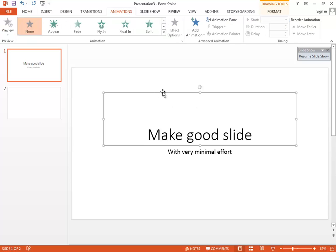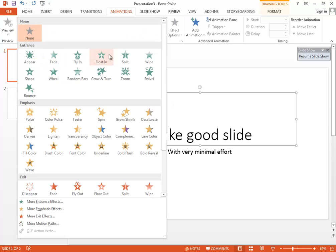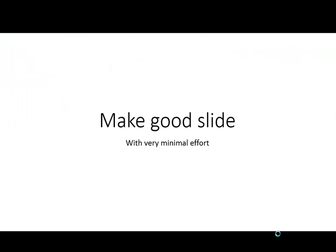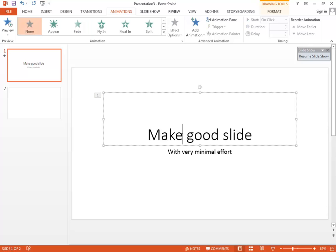To add animation to any object, just go to the animation panel and select that object. After selecting it, from the menu you can choose any animation you like. I really like the fade animation, which just fades the text in.